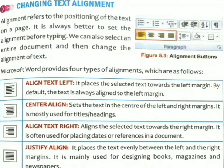Align text right aligns the selected text towards the right margin. It is often used for placing dates or references in a document. Right alignment is most prominently used for dates in your document.